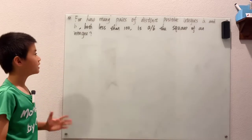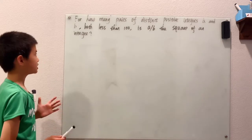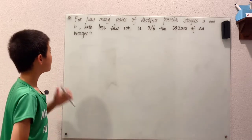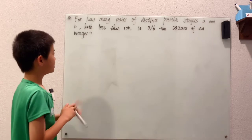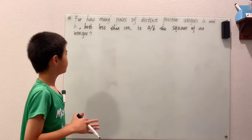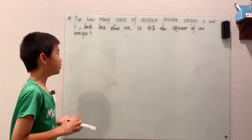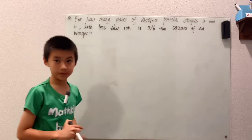How many pairs of distinct positive integers A and B, both less than 100, is A over B the square of an integer? Now here, if we're taking distinct positive integers and they're less than 100, that means if you're dividing them they can't get bigger than 100, meaning A over B is less than 100.